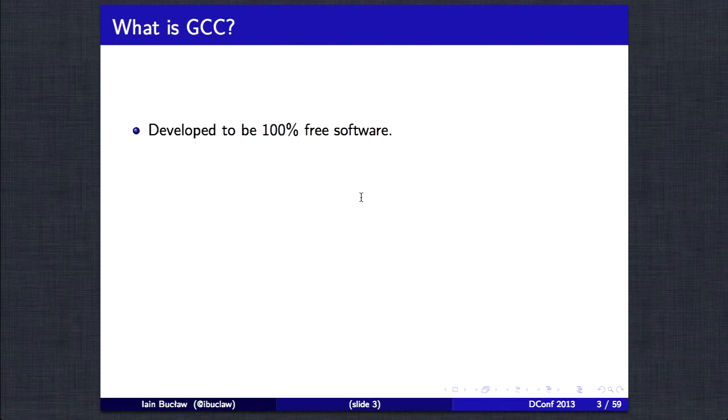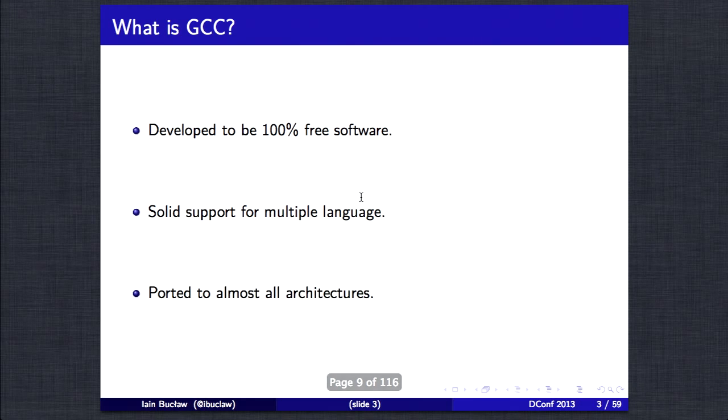So starting off what is GCC? GCC stands for the GNU Compiler Collection. It was originally written for the GNU operating system and it was developed to be 100% free software in terms of free as in the user's freedom. Roughly speaking users both individually and collectively can contribute and improve upon the software. The frontend has massive support for many languages including C, C++, Objective-C, Objective-C++, ADA, Fortran, Java and Go.